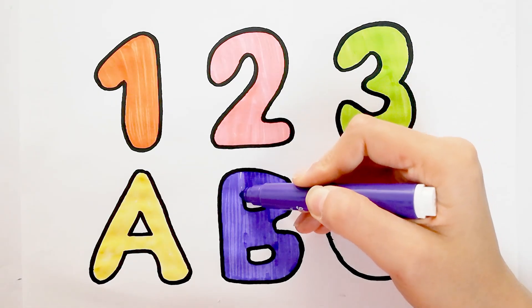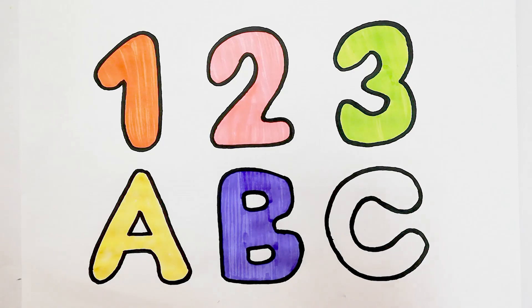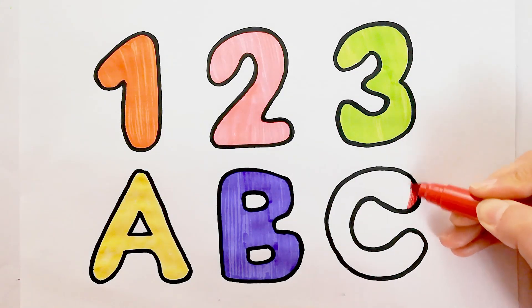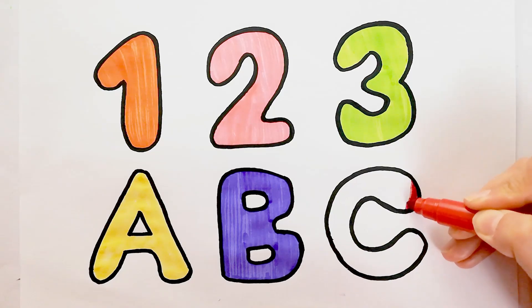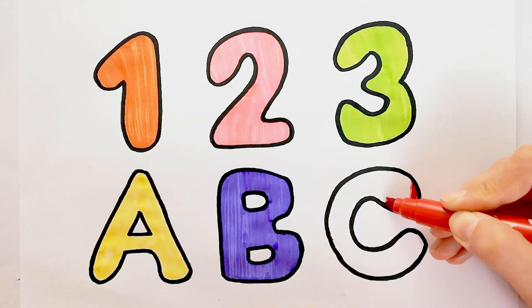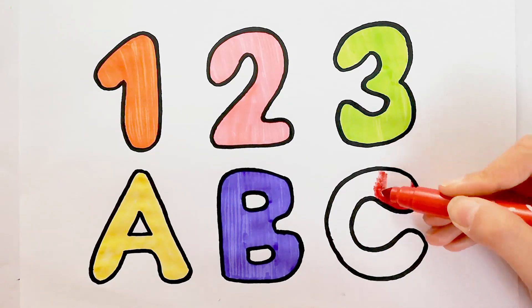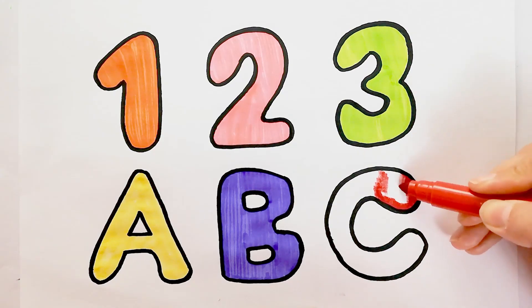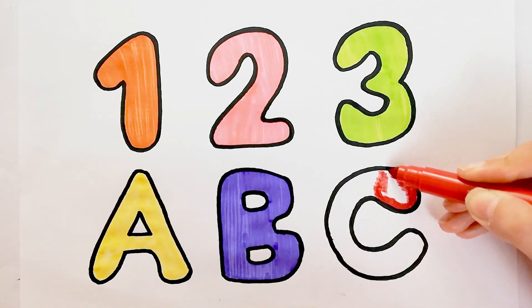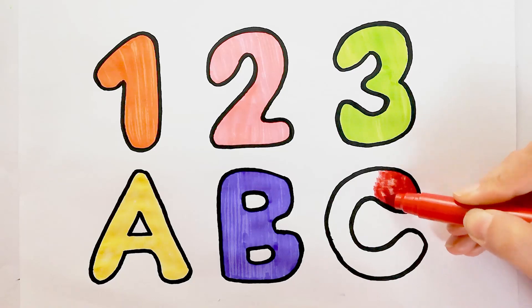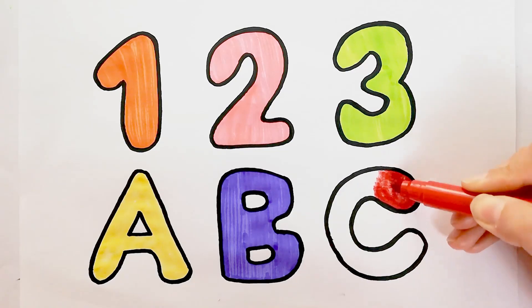A, B, C, D, E, F, G, H, I, J, K, L, M, N, O, P, Q, R, S, T, U, V, W, X, Y, and Z. Now I know my ABCs, next time won't you sing with me?